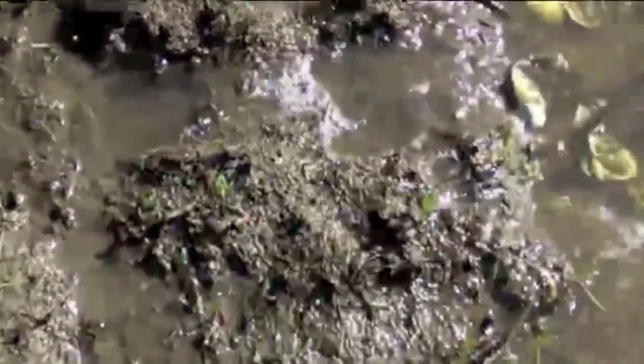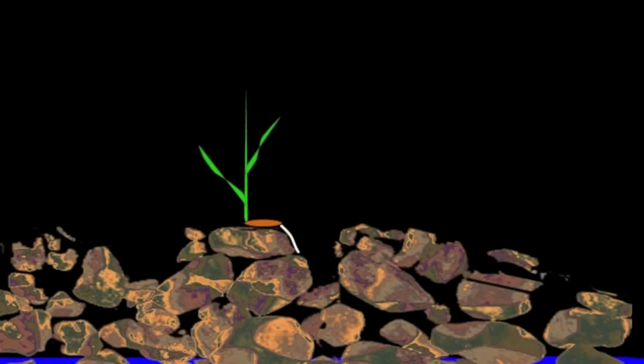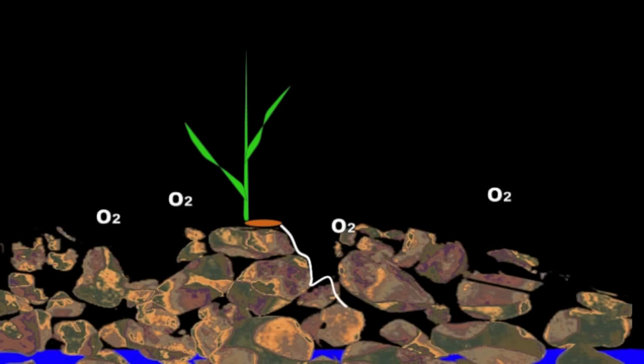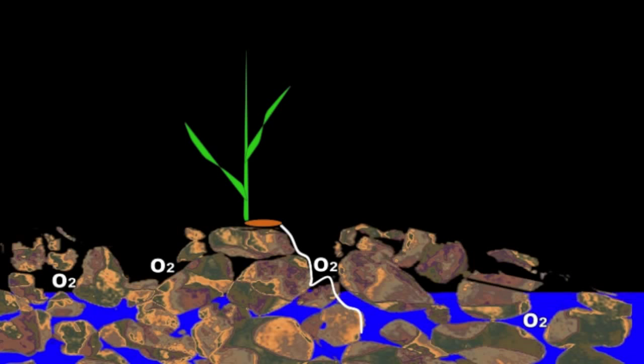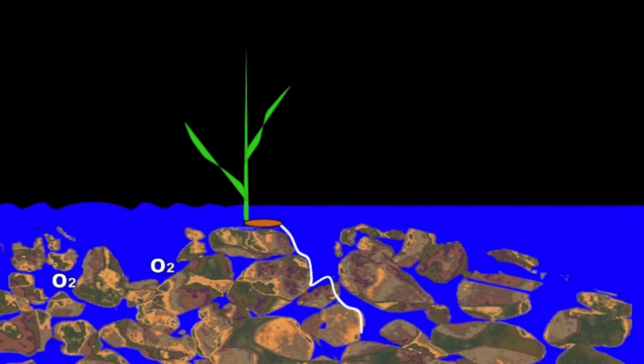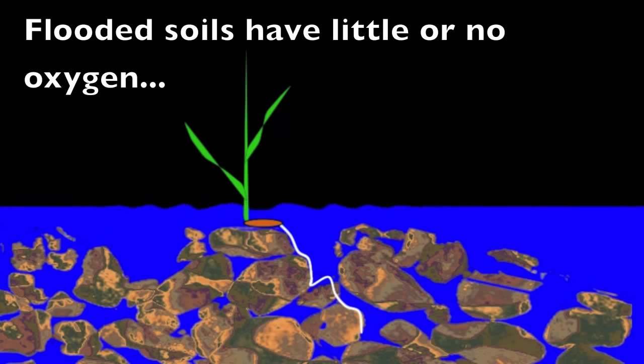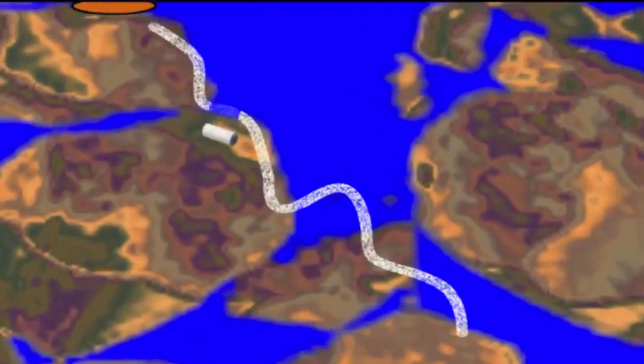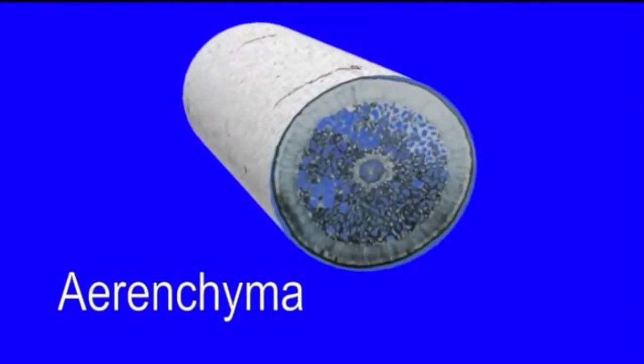Wetland plants must tolerate periodic flooding. When a plant establishes in a well-drained soil, the pore spaces between soil particles are filled with oxygen. Upon flooding, however, soil pores become filled with water, and respiration of microorganisms uses up oxygen faster than it can be replaced. Thus flooded soils have little or no oxygen. Plants tolerate such low oxygen conditions by developing special airspace tissue inside the roots called aerenchyma, which creates an internal aeration pathway that allows oxygen in the atmosphere to reach the roots. This is one mechanism that allows plants to survive flooding.